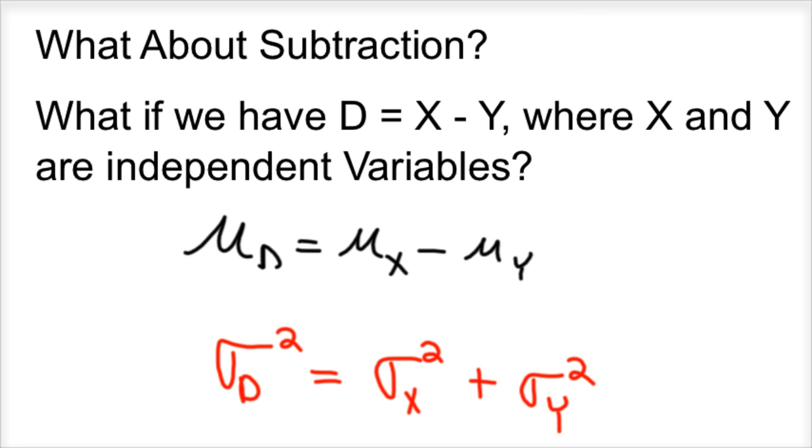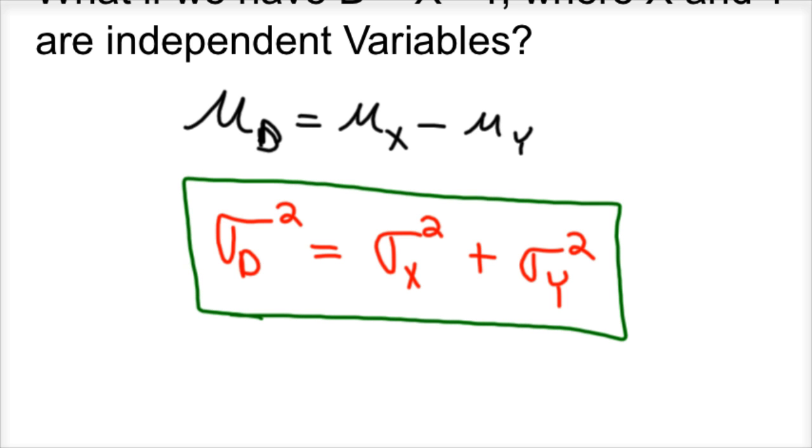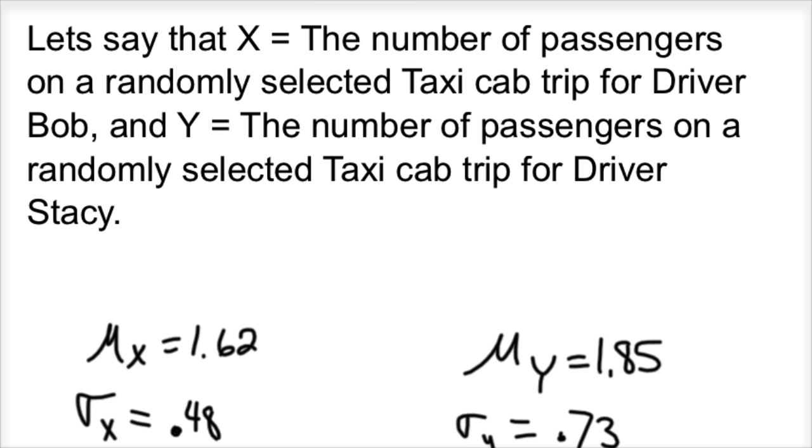What about subtraction? What if we had D equals X minus Y, where X and Y are independent random variables? You can still subtract. Mu sub D is mu sub X minus mu sub Y, or the expected value of X minus the expected value of Y. That still holds. But your variance equation is not subtraction, it is addition. That's a huge one to remember. Even if you subtract your means, you will have to add your variances. That's just something you need to remember.